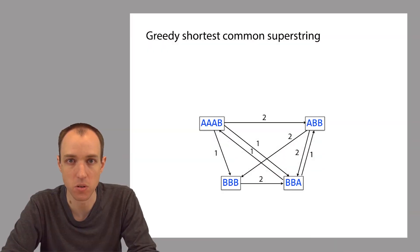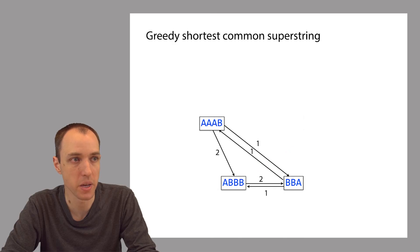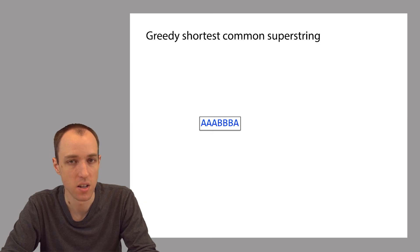Now, what do we do next? We do the same thing again. We're going to pick the edge with maximal overlap length. Again, there's a tie, so we're going to pick one at random. Let's say we pick this one, highlighted in red. Then again, we'll merge these two nodes. We'll merge ABB and BBB to get ABBB. Here's our new graph. And we'll do it again. Let's pick another edge with maximal overlap. Let's say we pick this one, merge. Then pick this edge, then merge. And now we're done.